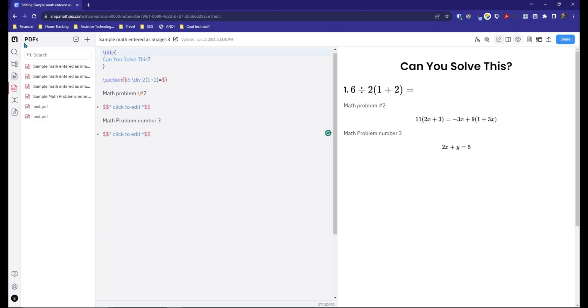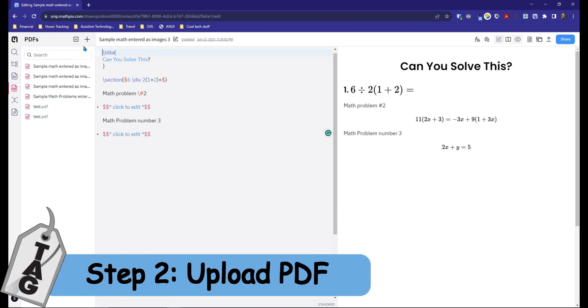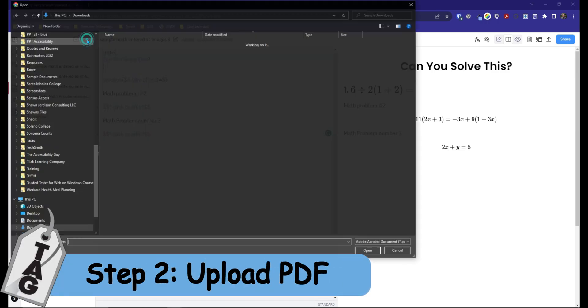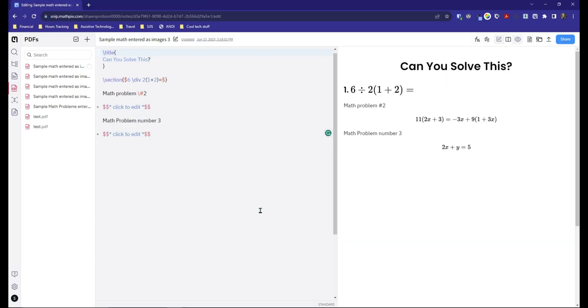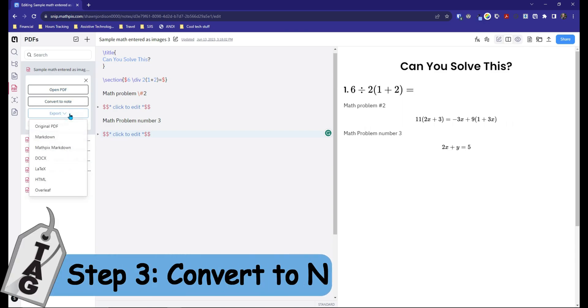We log into our account. Under the PDF option on the far left, there's a button to upload a PDF. From here, we're going to find our math problems and upload the file. We then get an option to either open the PDF, convert to a note, or export the file out.